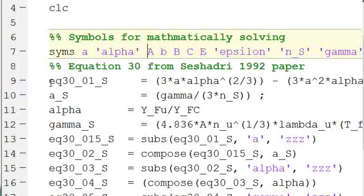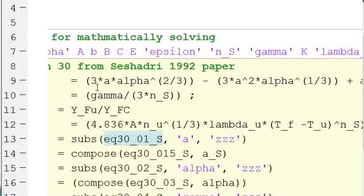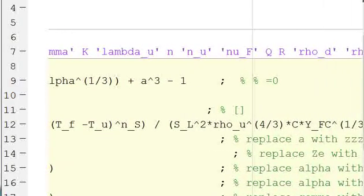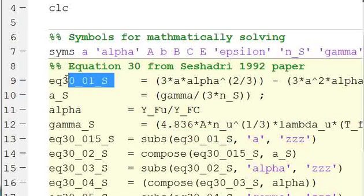Then you're going to define your equations. So we have this equation, eq30_01_S. And then we're going to write our equation out: 3A times alpha to 2 thirds minus 3A squared alpha to 1 third plus A cubed minus 1. And so this equation is equal to 0. Generally when you make an equation like this, it's easiest to make it all equal to 0, because it's hard to define a variable like this and have it equal to something other than 0.